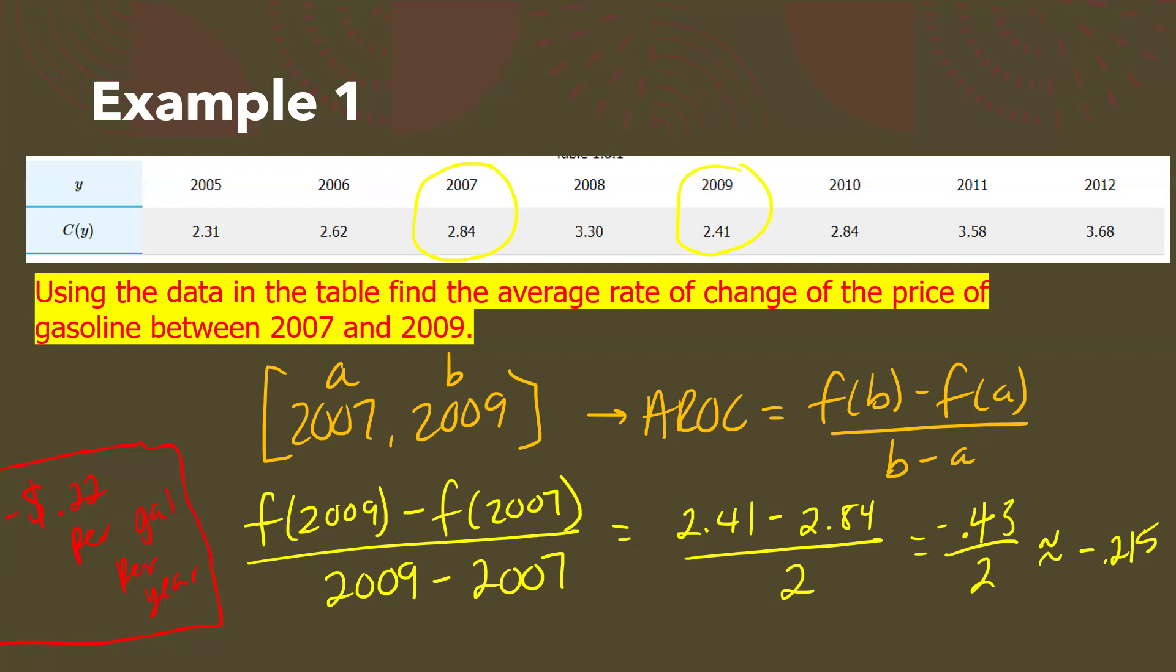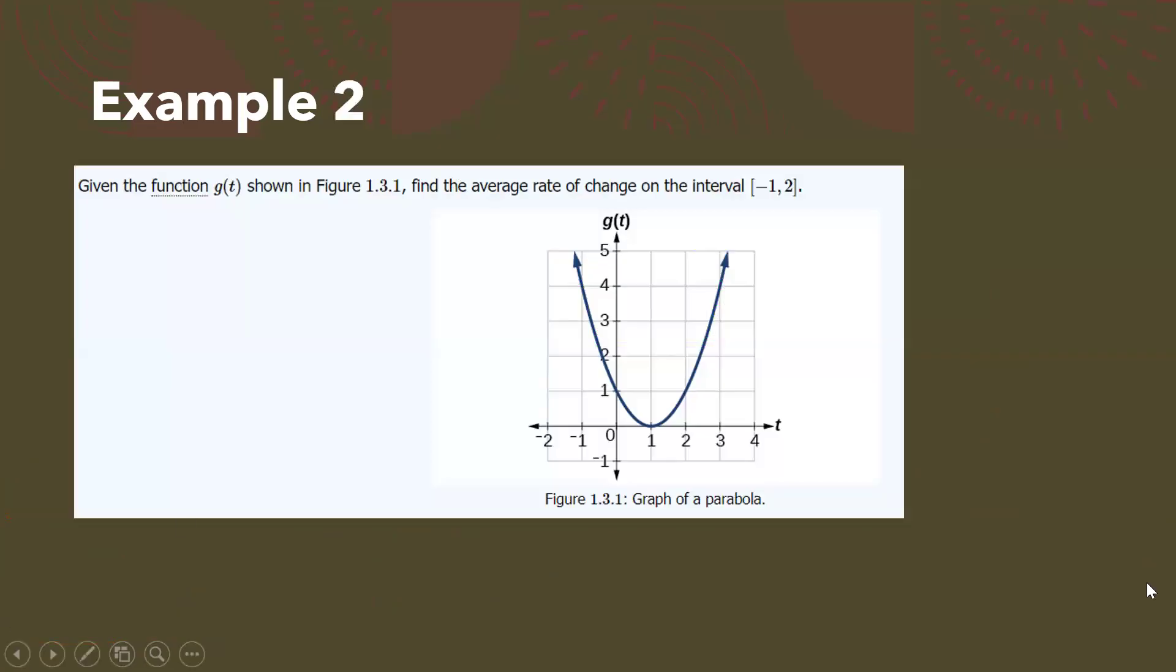Again, when you're writing your unit, your unit comes down to what's your dependent represent over your independent. Our dependent represented the cost per gallon and our independent represented our year. So that's how my units would work. How do you feel about AROC? Doable. Let's try it without anything else. So just looking at a graph and it says that I'm going to analyze the graph from negative one to two. So all I'm looking at is from negative one to two. And I'm going to analyze what's the average rate of change.